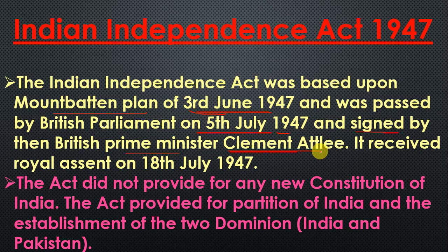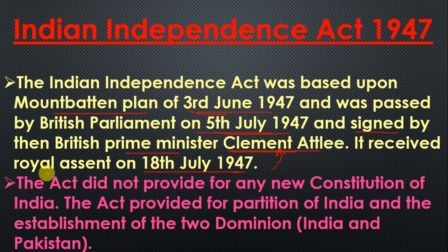This can be asked in exams — when India was gaining independence, who was Britain's Prime Minister? It has actually been asked before. The bill was passed on 5th July 1947, and it became an act — a law — on 18th July 1947 after receiving the Royal Assent. Just as in India a bill passed by Parliament doesn't become law until the President signs it, similarly a bill passed by the British Parliament doesn't become law until it receives the Royal Assent.